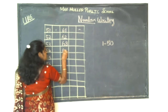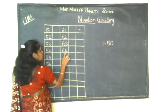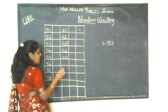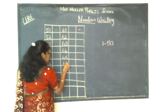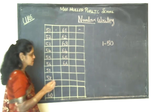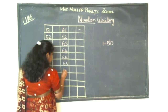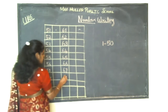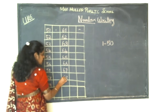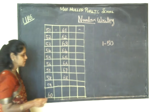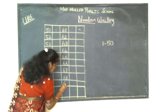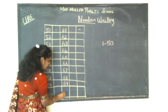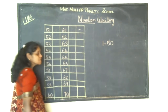6, 4 — 64. 6, 5 — 65. 6, 6 — 66. 6, 7 — 67. 6, 8 — 68. 6, 9 — 69. 7, 0 — 70.